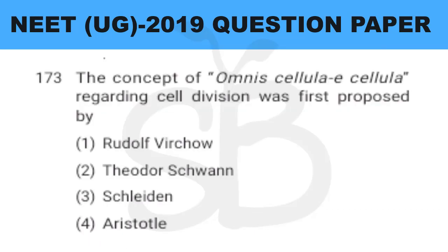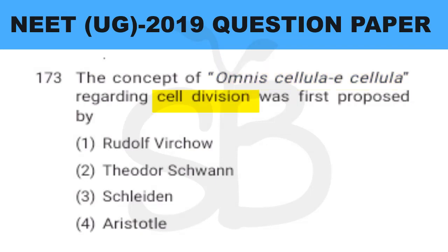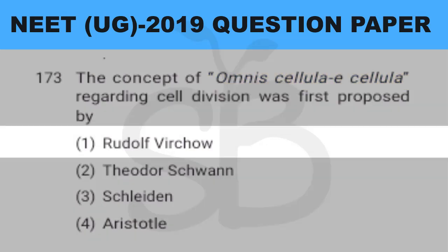Question number 173: the concept of 'Omnis cellula e cellula' regarding cell division was first proposed by? The answer is option 1: Rudolf Virchow.